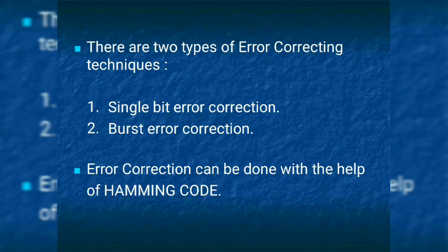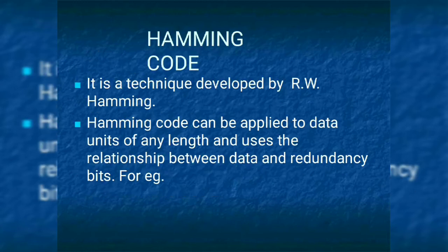There are two types of error correcting codes: single bit error correction and burst error correction. Error correction can be done with the help of Hamming code. Hamming — R.W. Hamming is the scientist — and he developed the Hamming code to detect errors. Hamming code can be applied to data units of any length. The relationship between the data bits and redundancy bits: for example, seven bits of a data code requires four bits of redundancy.